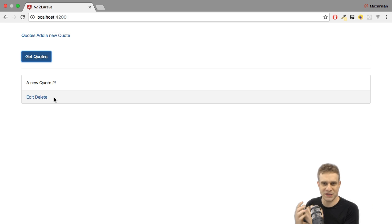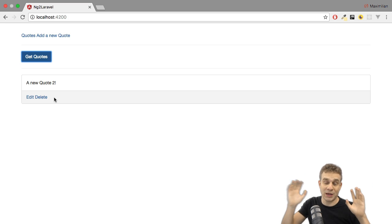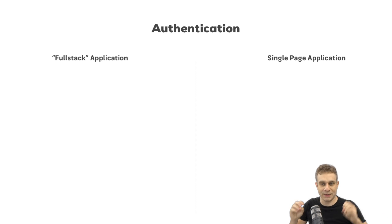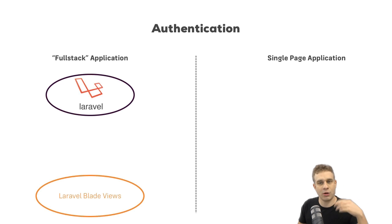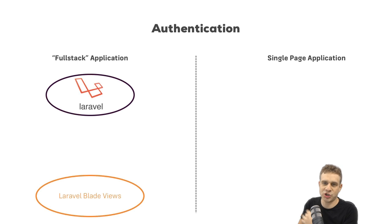But first, let's understand how authentication really works in such a setup where we have two different ends — our frontend using Angular or Vue, and our backend driven by Laravel. To best understand this, let's compare it to the default traditional setup you might know from a full-stack application where you have Laravel on the backend and also have Laravel render views through the Blade templating engine. In this approach, authentication looks like this.